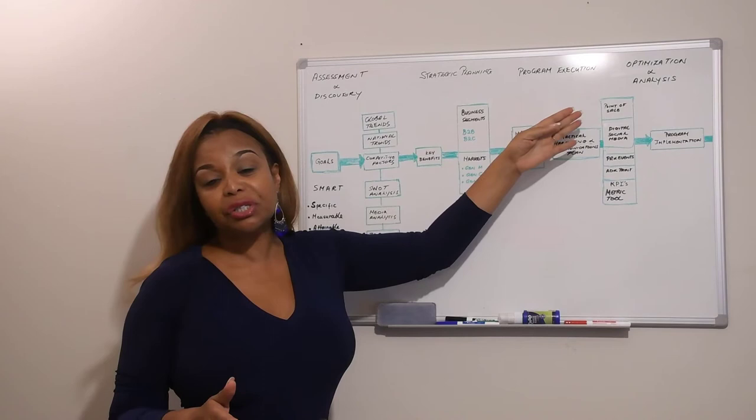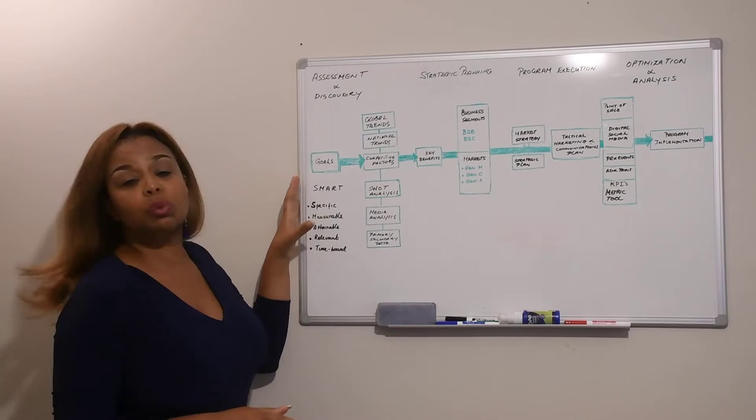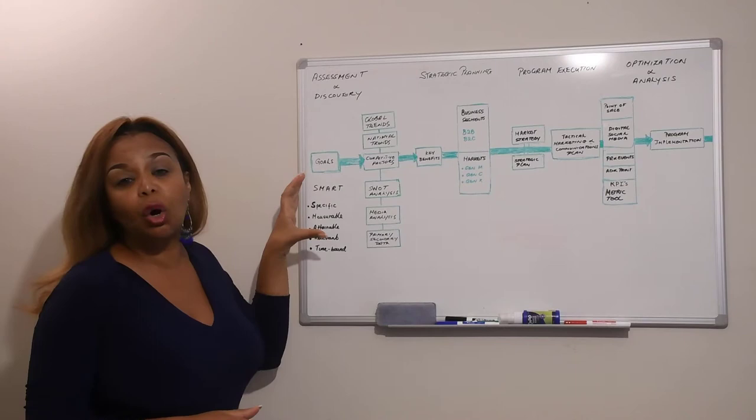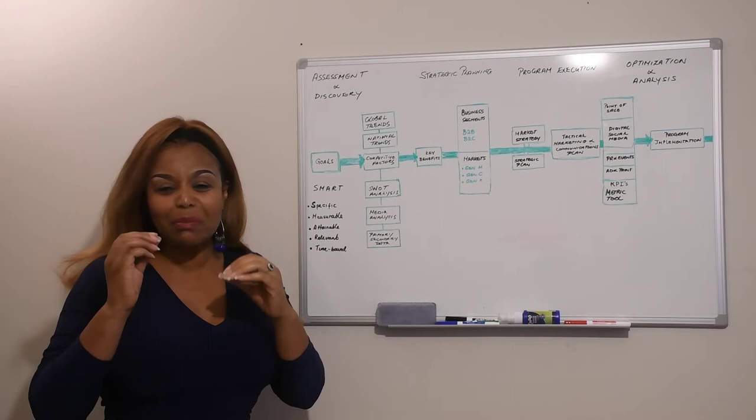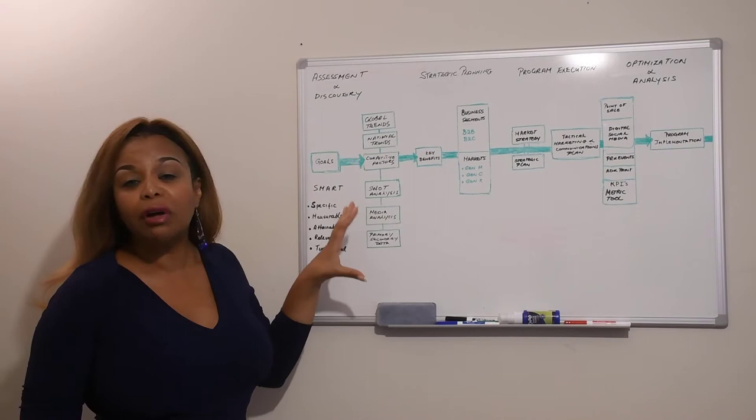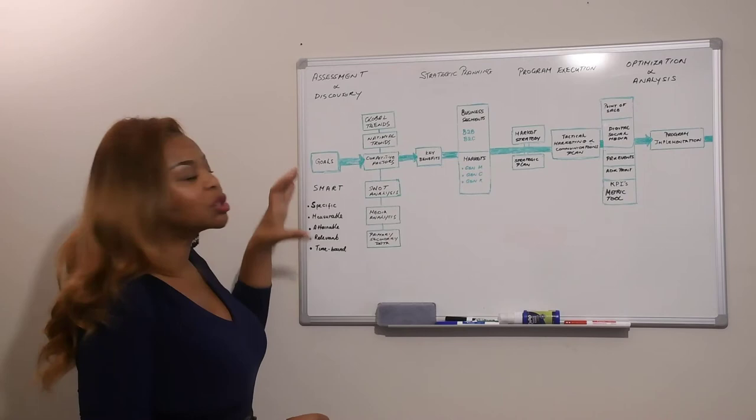Let me walk you briefly through the four phases. In phase one, assessment and discovery, you have to make sure that you're setting goals. These goals have to be realistic, measurable, and attainable. They really should involve everyone in the organization that has a stake in this. This is what's going to really motivate your team to achieve their objectives.